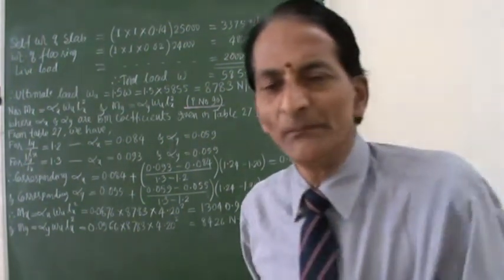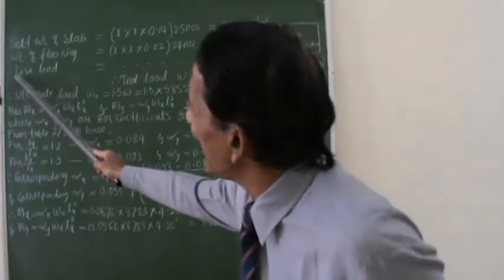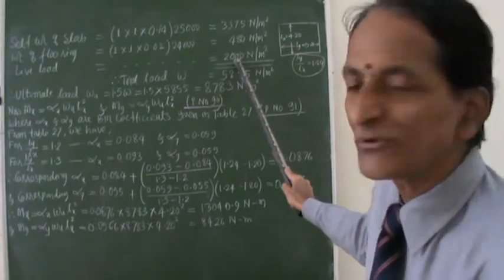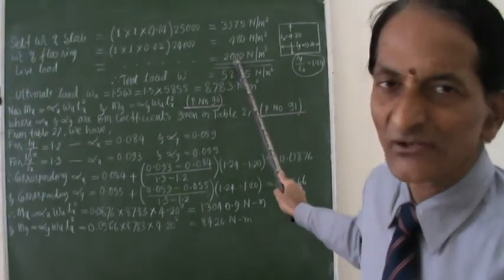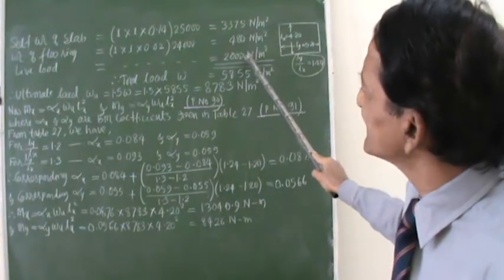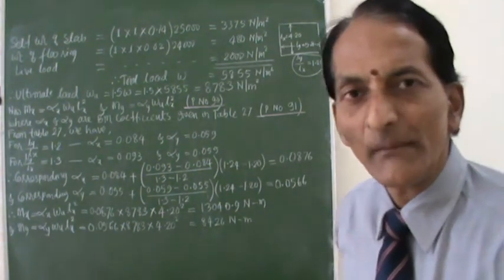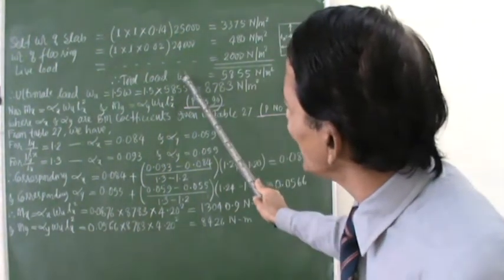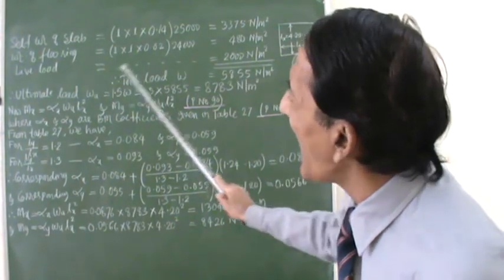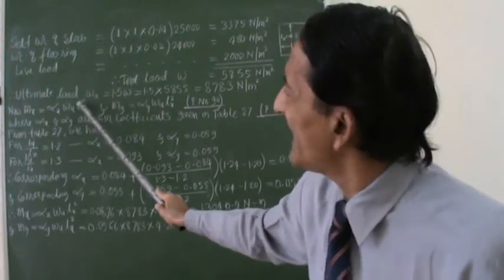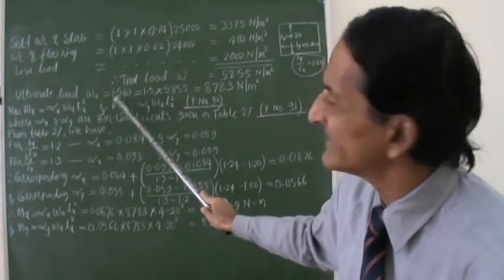Also, in the problem, he has said that the live load acting on the slab is 2,000 newtons per meter square. So if I add all these things, it will give me the total load, total load w. So now, I want to convert this w into ultimate load.